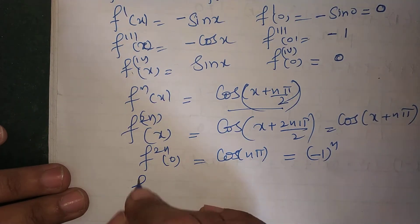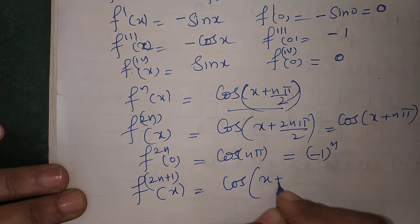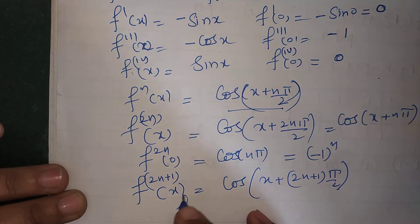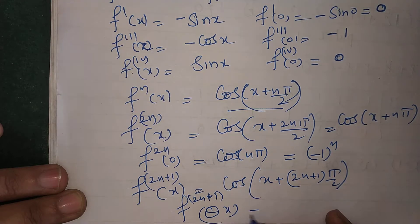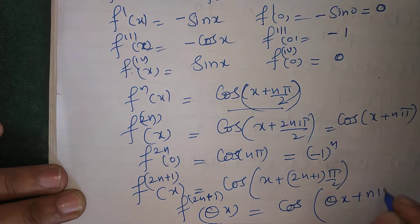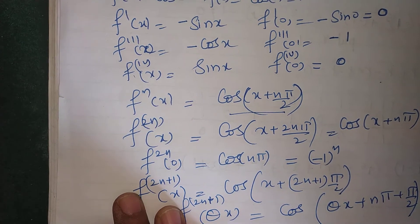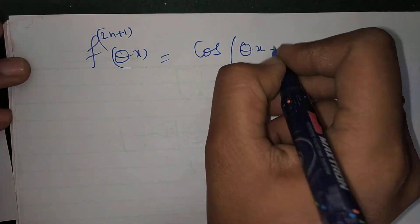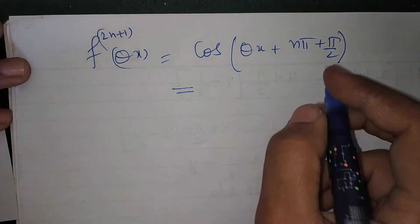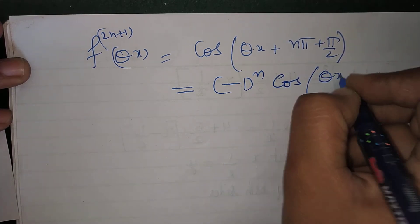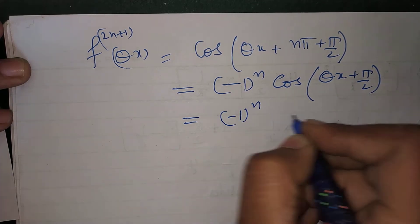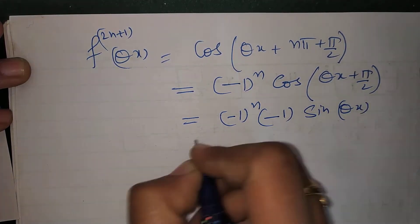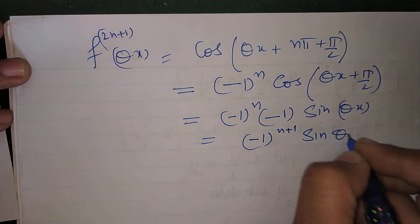f^(2n+1)(x) = cos(x + (2n+1)π/2). So f^(2n+1)(θx) = cos(θx + nπ + π/2), which equals (-1)^n cos(θx + π/2), which equals (-1)^n · (-sin(θx)) = (-1)^(n+1) sin(θx).